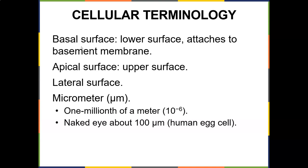Some subcellular terminology: you have a basal surface, which is the lower surface and attaches to the basement membrane; an apical surface, which is the upper surface; and a lateral surface. A micrometer is written as μm — one millionth of a meter, or 10 to the negative six. The human eye can see down to about 100 micrometers.